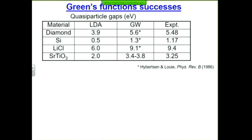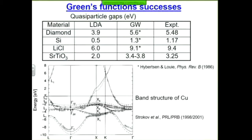So everything is mathematically defined. Let's see how good this theory is. For the same materials plus one more, comparing LDA, experiment, and GW — you can see that GW brings the errors down to a few tenths of an electron volt. It's not perfect, but that's good enough for quantitative materials prediction. You don't have to do insulators — here are energy-versus-momentum plots for copper. The dots are experiments, the solid line is GW, and the dashed is DFT. The differences are real and measurable.